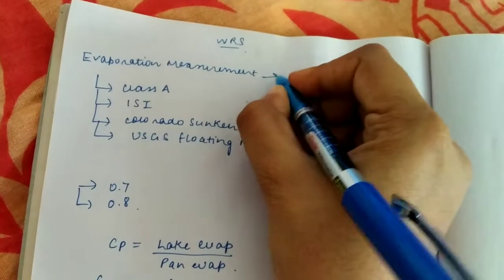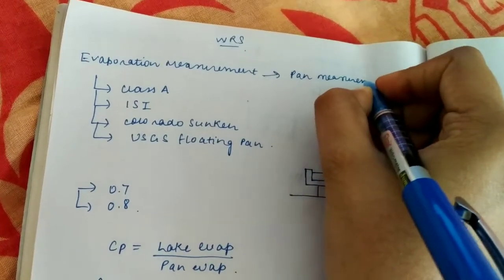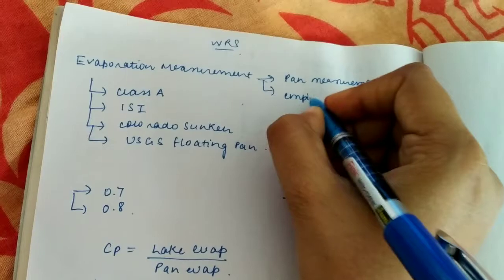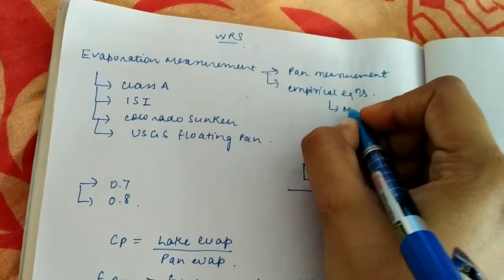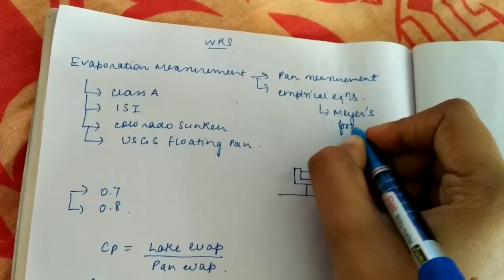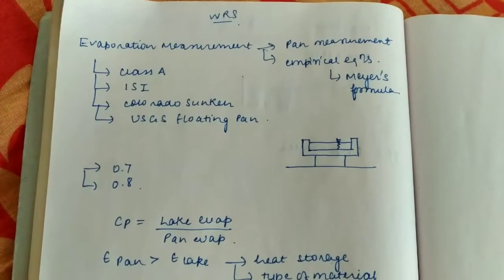two methods. We can have pan measurement, and we also have empirical equations, that is, Mayer's formula. First, we'll have a quick review of what are the different types